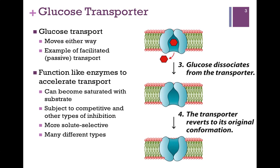These types of transporters are similar to enzymes in that they can also become saturated with substrate. If all of our glucose transporters were saturated with glucose, we'd see the same type of saturation plot that we saw with enzymes — the hyperbolic plot where, when the enzyme is saturated with substrate, velocity ceases to change. They're also subject to competitive and other types of inhibition; a molecule similar enough to glucose might be transported in place of glucose. These transporters tend to be very solute selective, ensuring we're moving a particular nutrient into or waste product out of the cell.